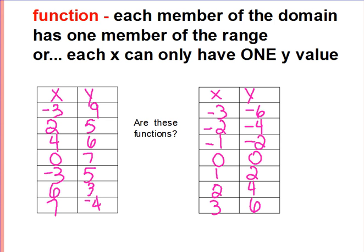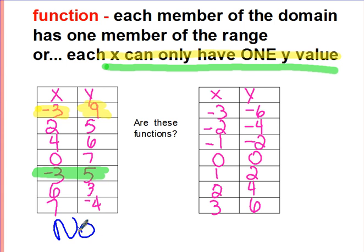Let's see how you did. This example says that each x can have only one y. So what we need to do is see if there's any repeats in the x. This negative 3 belongs to a 9, which means that negative 3 can only belong to 9. Are there any other numbers in the table that have negative 3 with a different value of y? Yes, there is. Negative 3 and 5. So if each x can have only one y, then we would say that this example is not a function.